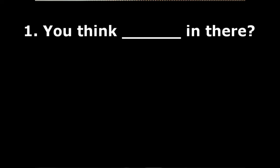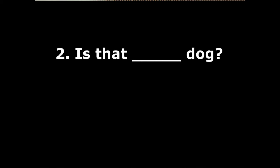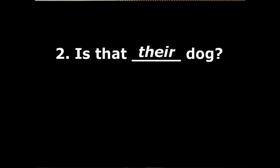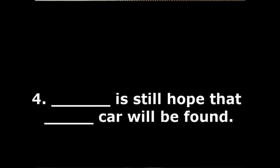There you have it, guys. I know they are not that easy to understand immediately, but I hope that after watching this video you can now identify their differences. So before we end, let's answer the exercises from earlier and see if you got all the answers correctly. Number one: you think they're in there? Number two: is that their dog? Number three: are you still there? Number four: there is still hope that their car will be found. Number five: they're proud of their children.